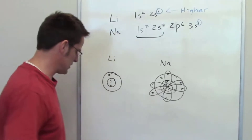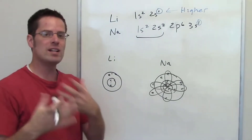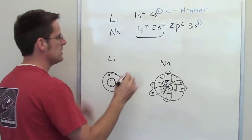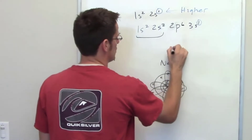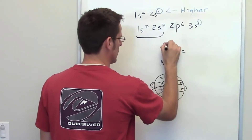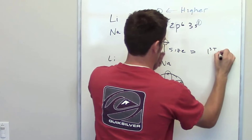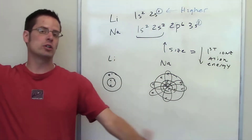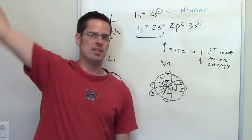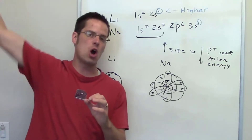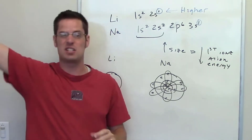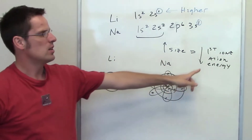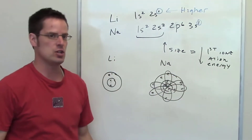That brings us to the second question: what is the general relationship between size of an atom and its first ionization energy? As size gets bigger, first ionization energy goes down. As you get a larger and larger element, it's easier to take that outermost electron away because it's so much further from the nucleus. So larger size means lower first ionization energy, and vice versa.